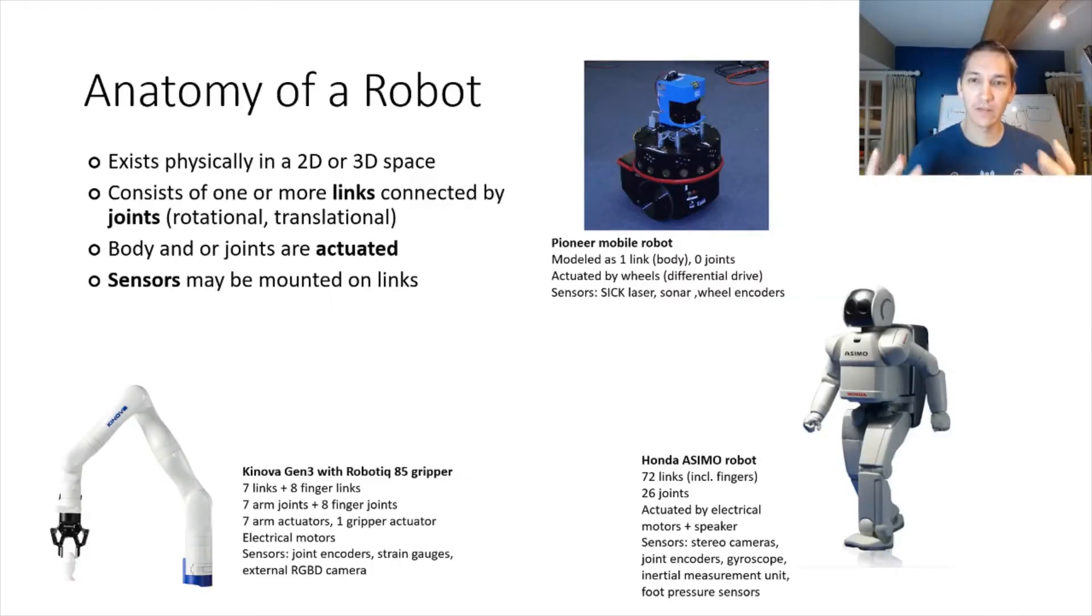Although we have many different types of forms of robots, ranging from mobile robots to very complex robots like humanoids, we can represent them in a common language. All robots need to exist physically in either two-dimensional or three-dimensional space. We can oftentimes model mobile robots as existing in two dimensions, although most other robots will have to start thinking in 3D.